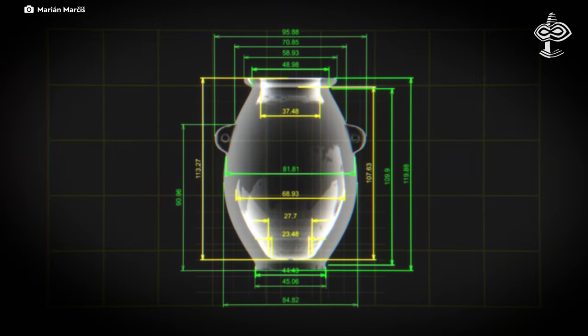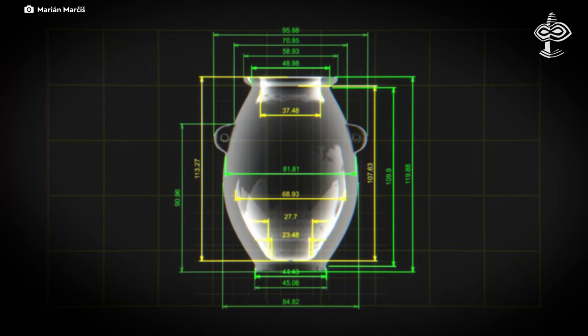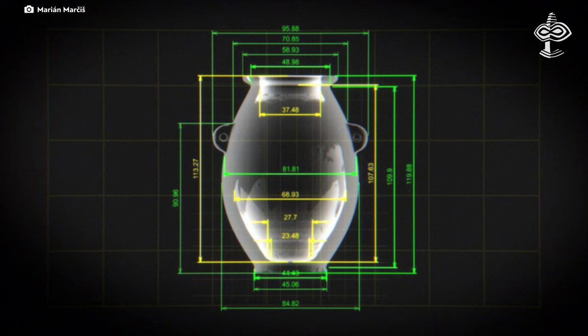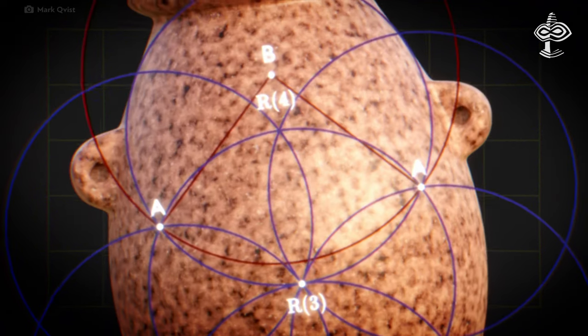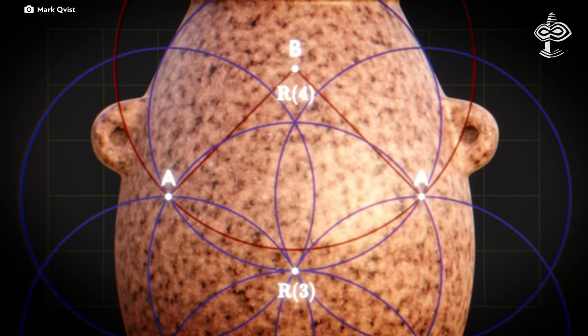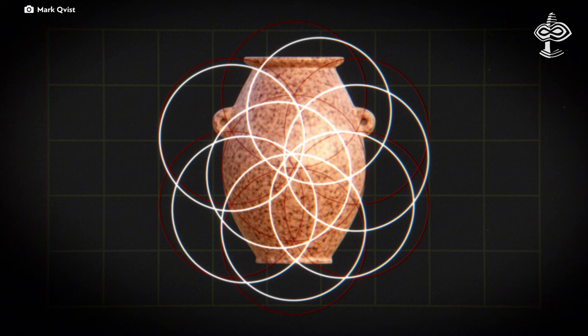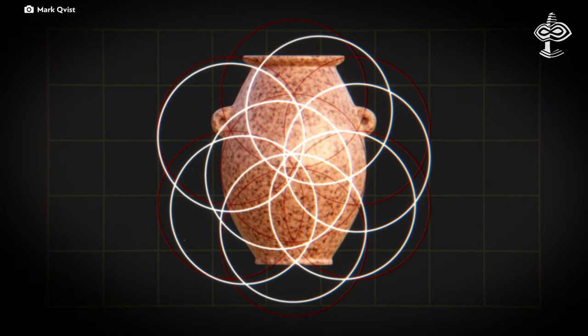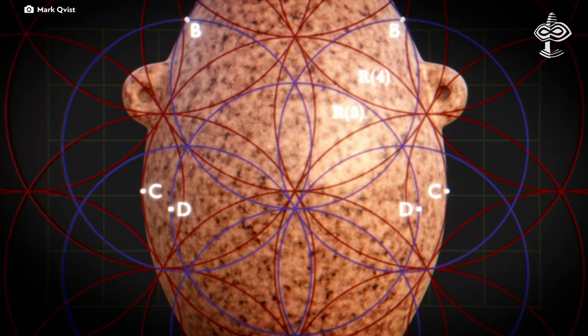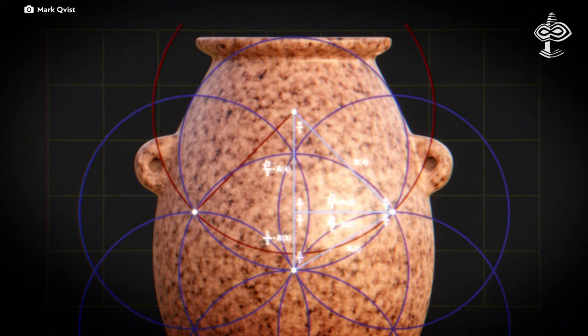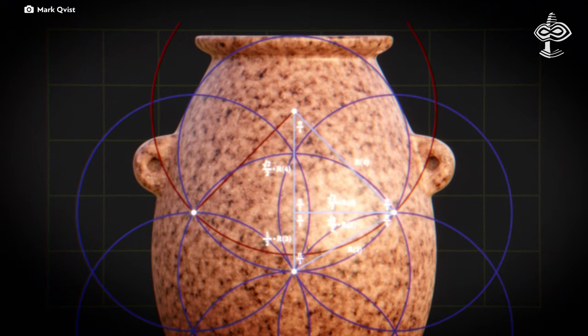Their calculations revealed that all proportions in the object are tightly interwoven. Altering even a single parameter in the design would disrupt the entire structure. Mark's team identified at least 15 levels of interrelation, all precisely synchronized down to microscopic scales.